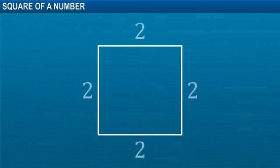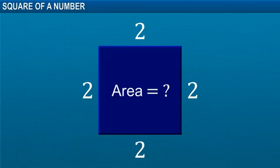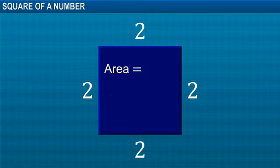Given a square of side 2 units, how will you find its area? You need to find the square of the length of its sides.